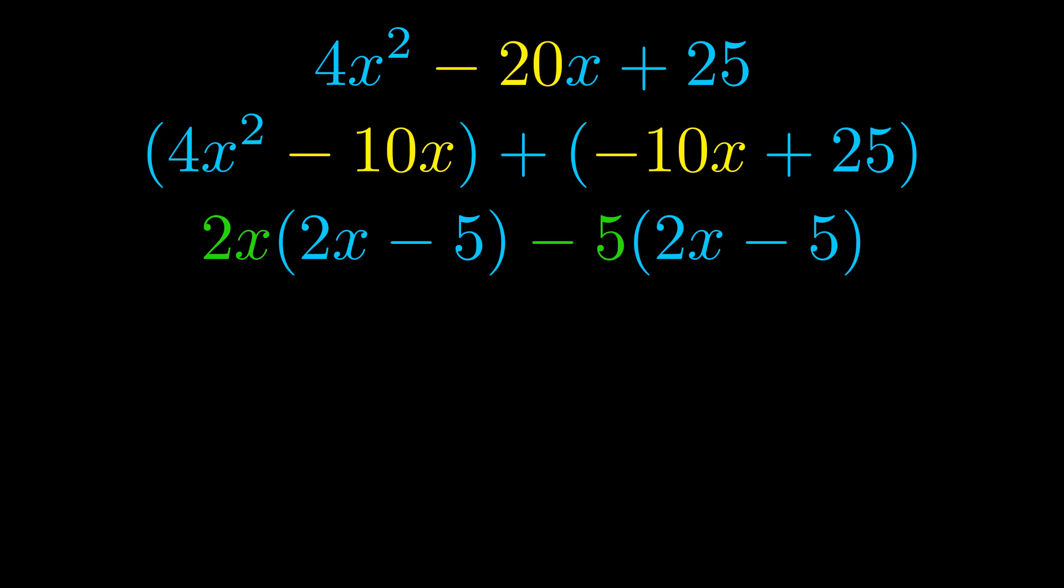Notice also how what remains inside of the parentheses is the same in both cases. The blue values are the same. Those blue values will become one of our factors and we will combine the two green values the GCFs that we pulled out to get the other one. And that is our fully factored equation.